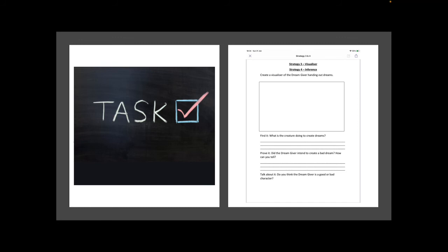So it's task time boys and girls, it's time for you to pause the video. And the first thing you've got to do is to create a visualiser of the Dream Giver handing out the dreams. So remember I showed you that at 1 minute and 19 seconds. So a visualiser with as much detail as possible and I would like you to label that visualiser like we talked about last week so that I can see your understanding with this. Then you have the three questions that we've just discussed and I'd like you to write your answers to those just now.